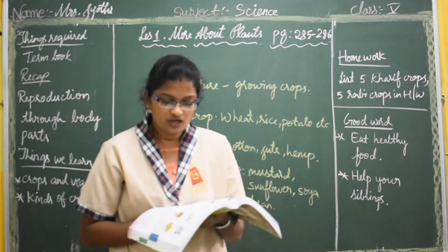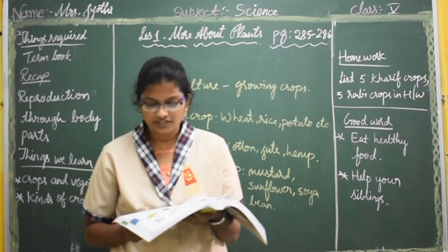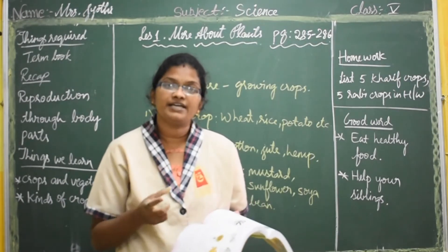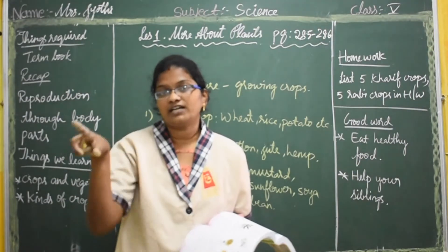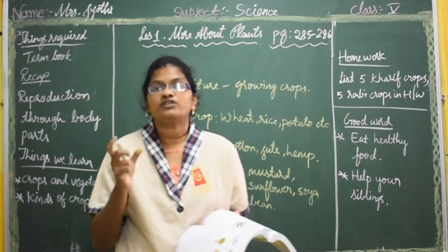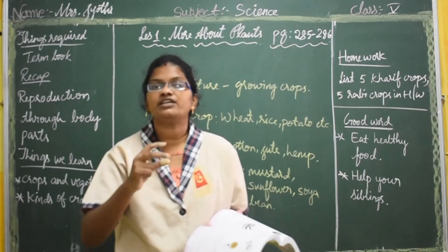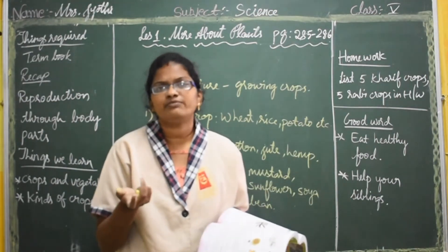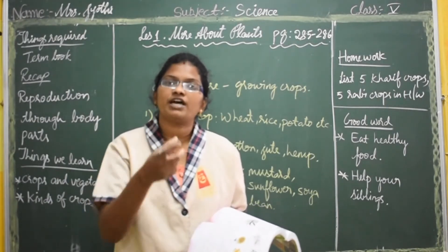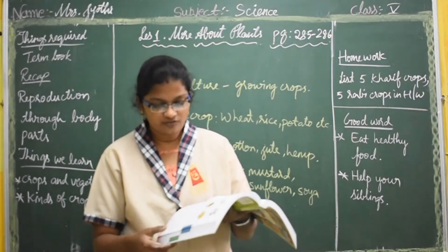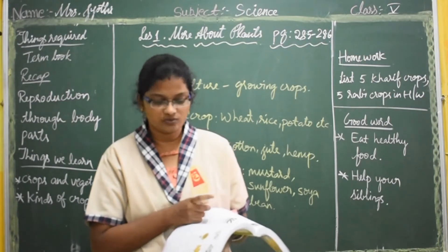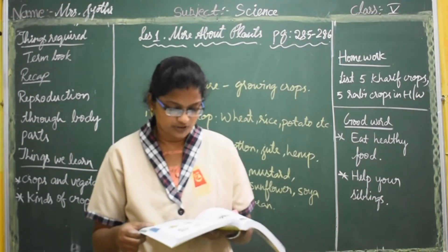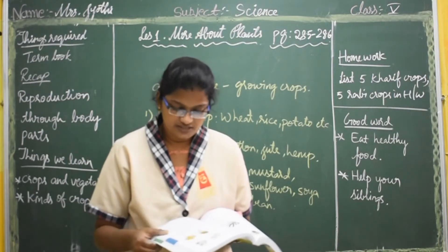To grow properly, all crops require sunlight, air, water, and fertile soil which can provide all the nutrients. Fertile soil means soil that has all types of nutrients essential for a plant to grow. Some crops may require one of these in a greater or lesser amount, so they are grown in different seasons and in different areas. Few plants do not require much sunlight, but few require more. Few plants require large amounts of water whereas few do not require much water at all.